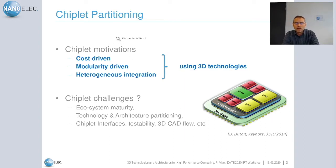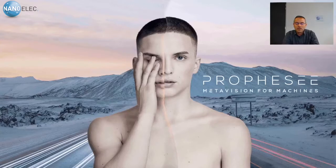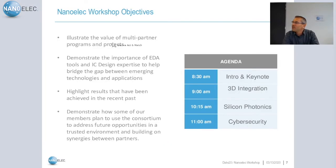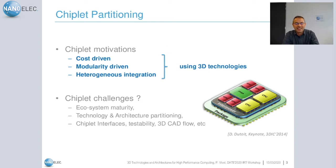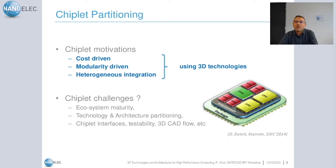Second, it's driven by modularity — chiplet partitioning allows modular systems in terms of both functions and ecosystem. Heterogeneous integration allows picking the right technology for the right functions: advanced CMOS technologies for computing, DRAM technology for memory, or OxRAM technologies for AI acceleration. All these chiplets will be integrated using advanced 3D technologies, which can be done using TSVs, micro bumps, or even more advanced technologies.